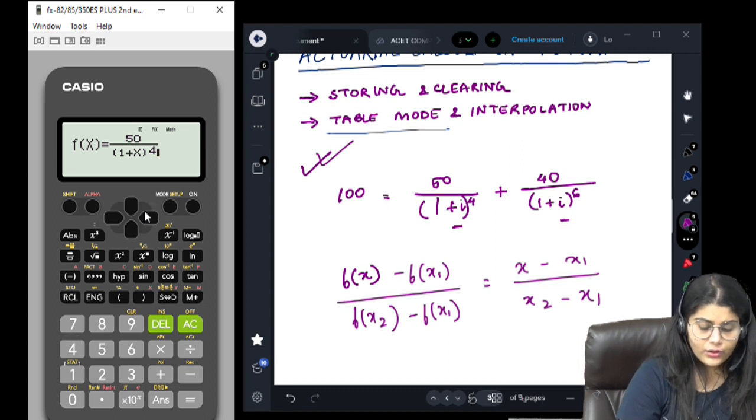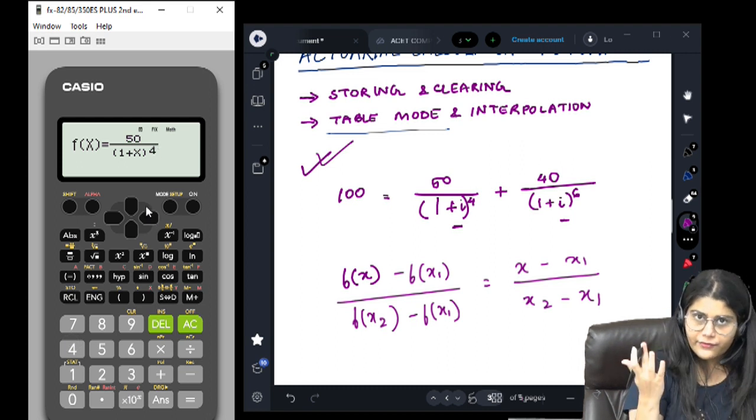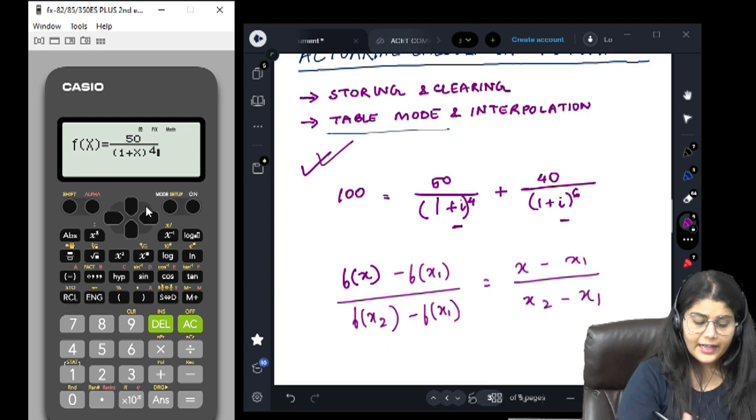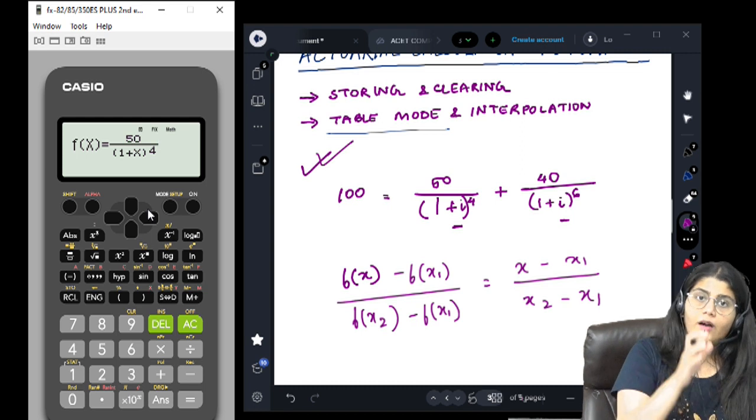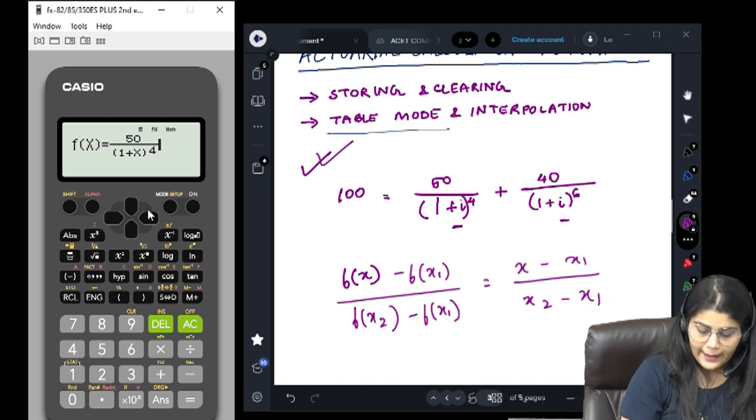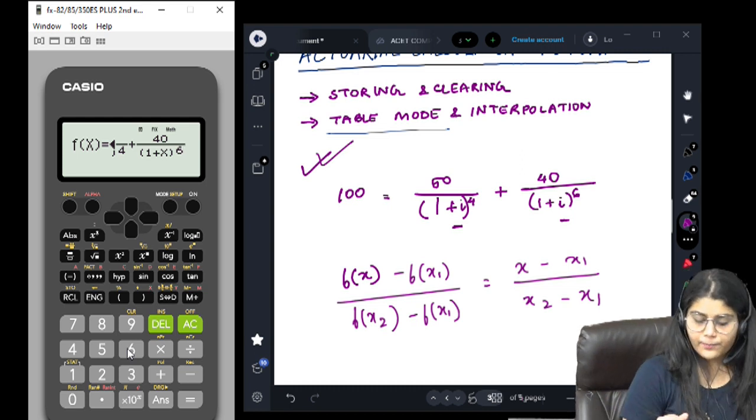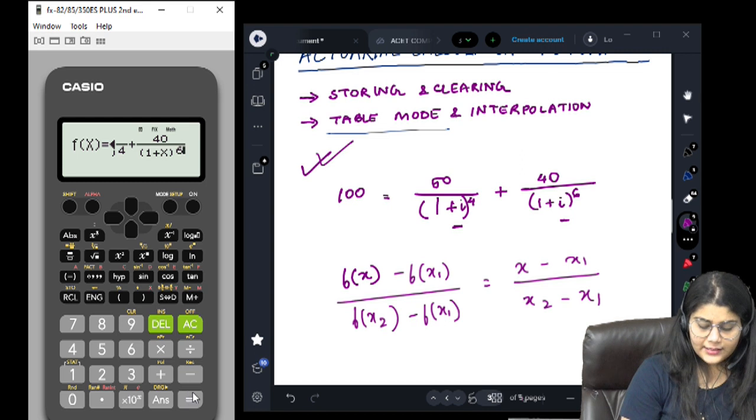Then I move out of the power first. My cursor has moved to the normal alignment. Then I again press the right navigation to move out of the fraction. Plus. Again, 40. And denominator, we have 1 plus x to the power 6. Now I have input my entire RHS. Next, I press equal to.